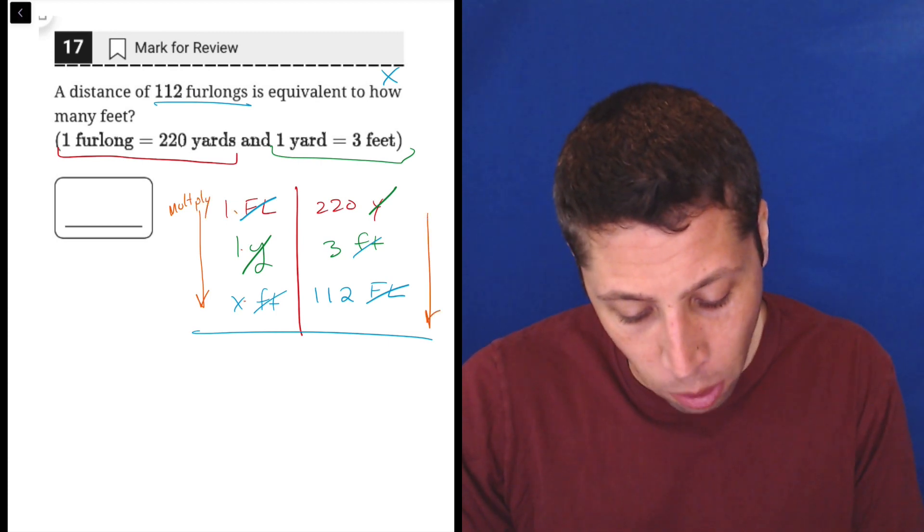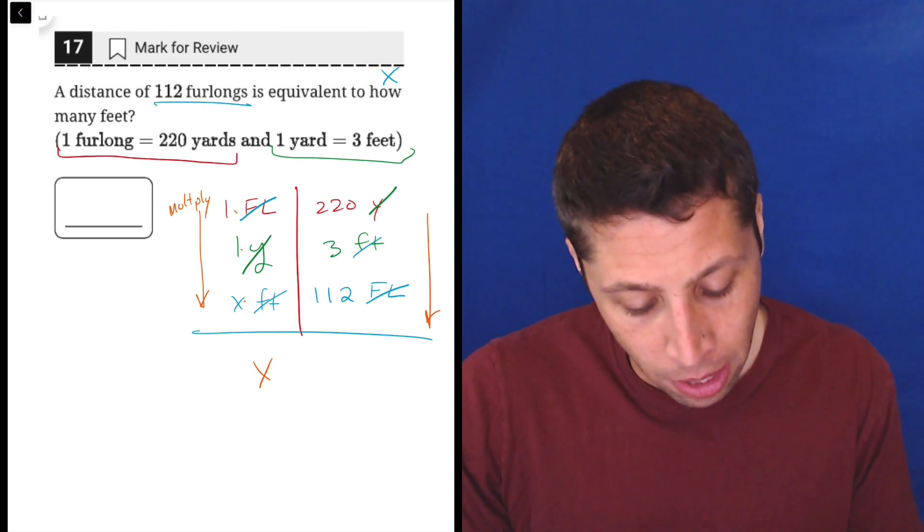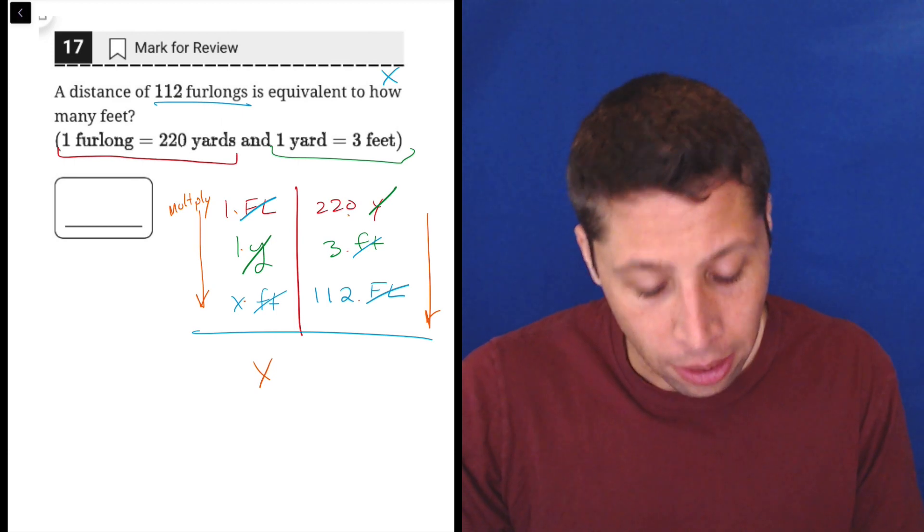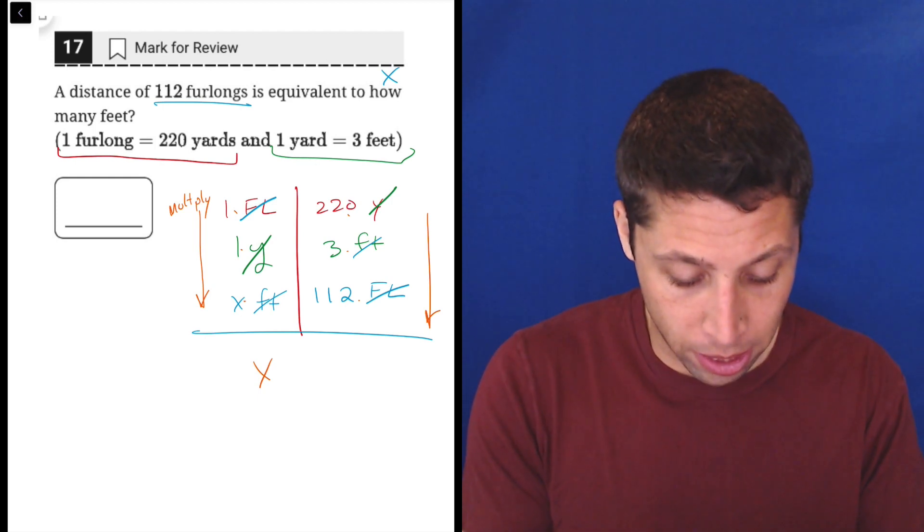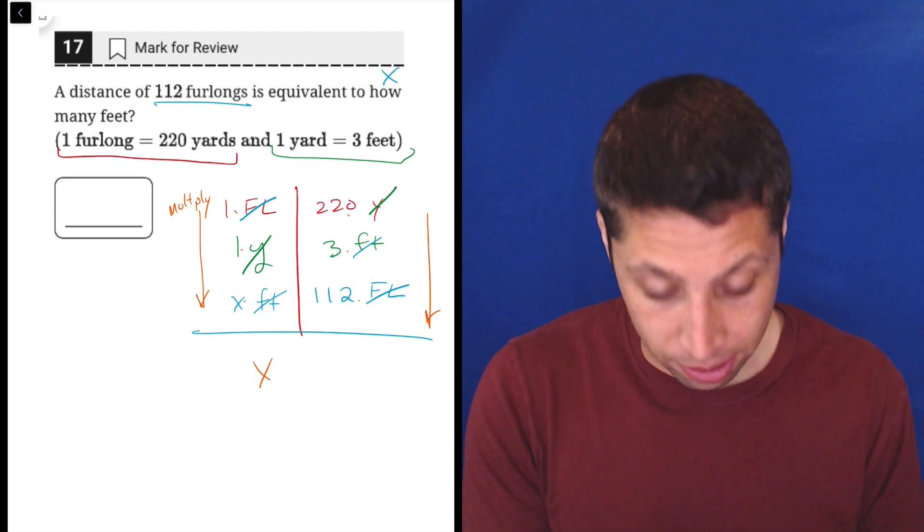The last step of this is we basically multiply down, multiply down both columns and see what we get. Right. So one times one times X is just X. 220 times three times 112. I'm going to use my calculator for that.